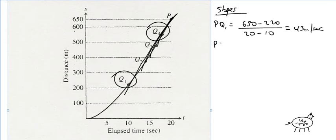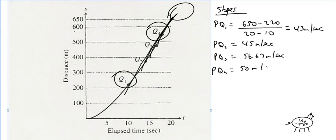And I can do the same thing for pq2. I'm not going to waste all kinds of time here, but it's going to be 45 meters per second. And pq3 is going to be 56.67 meters per second. And pq4, which actually is our best indicator because it's the closest one to the value of p, and notice we have no more data over here, so we can't actually find out that slope right at that value, right? We have to use that q4, and that is 50 meters per second.